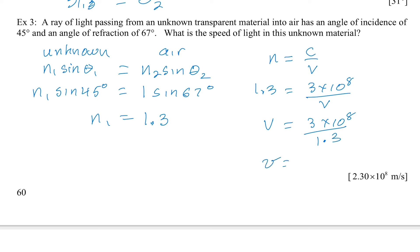And when I do that, I just really have to divide the 3 divided by 1.3. And I get 2.3 times 10 to the 8 meters per second.